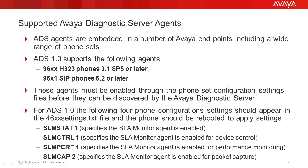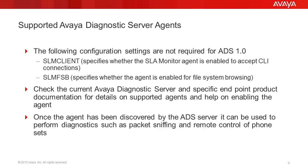For ADS 1.0, the following four phone configuration settings should appear in the 46XXsettings.txt file, and the phone should be rebooted to apply settings. SLM-STAT 1 specifies the SLA Monitor agent is enabled. SLM-CTRL 1 specifies the SLA Mon agent is enabled for device control. SLM-PERF 1 specifies the SLA Monitor agent is enabled for performance monitoring. SLM-CAP 2 specifies the SLA Monitor agent is enabled for packet capture.